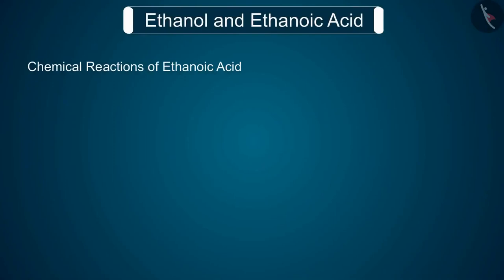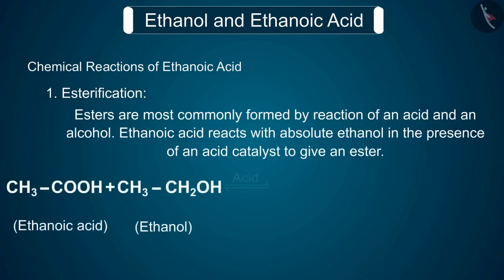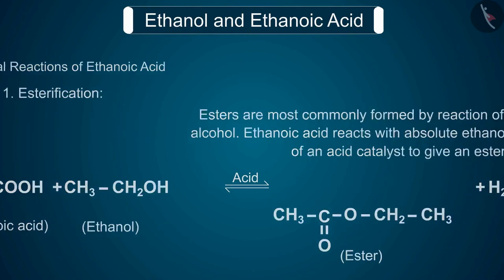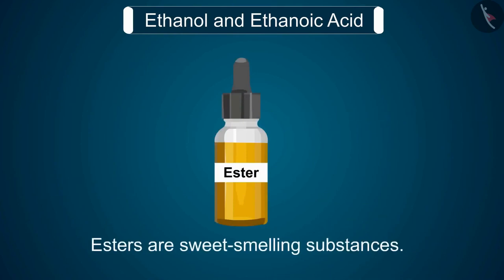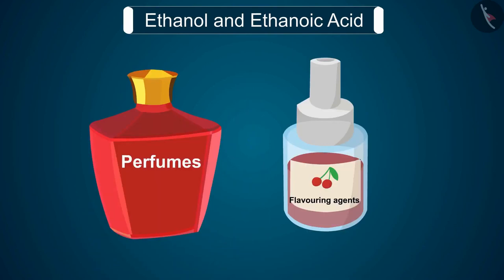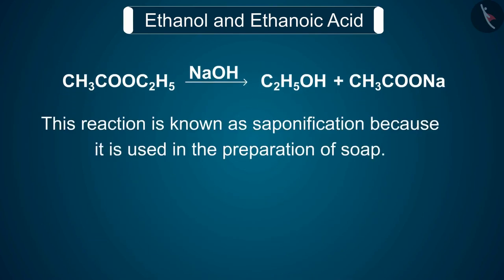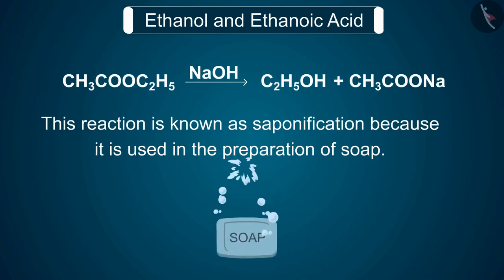We will now discuss the chemical reactions of ethanoic acid. Reaction 1: Esterification. Esters are most commonly formed by the reaction of an acid and an alcohol. Ethanoic acid reacts with absolute ethanol in the presence of an acid catalyst to give an ester. Esters are generally sweet-smelling substances used in making perfumes and as flavoring agents. On treating with sodium hydroxide (an alkali), the ester is converted back to alcohol and the sodium salt of carboxylic acid.